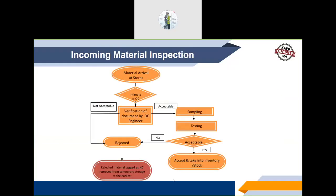Once material is received at the construction site, the store person intimates the QC person, who first verifies documents — batch numbers, invoice numbers, and material test certificate (MTC). If acceptable, the QC person proceeds to sampling and tests the sample at the QC lab on site. If acceptable, the material is taken into inventory. If not acceptable, it is marked as rejected, tagged as non-conformance, and removed from the construction site.